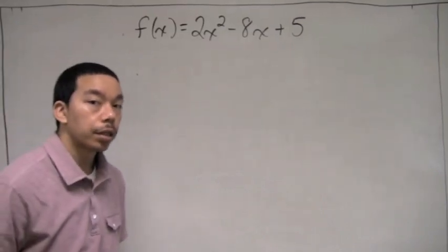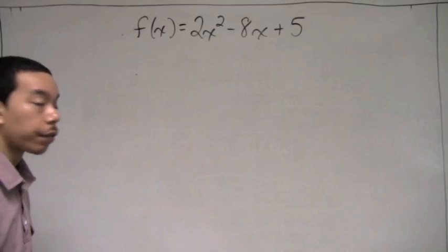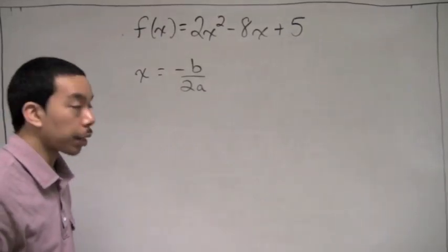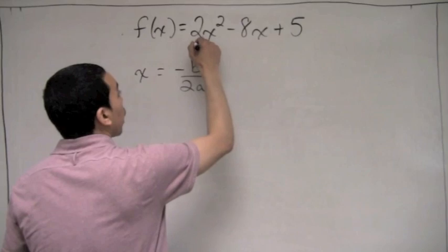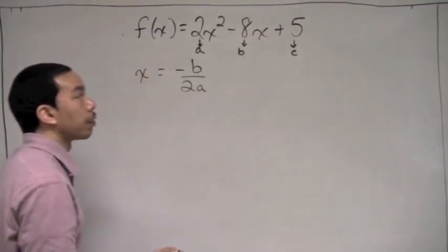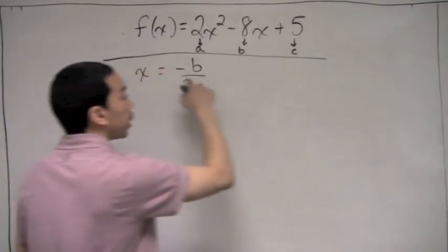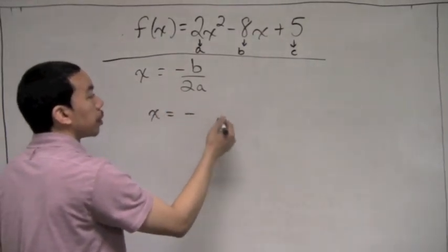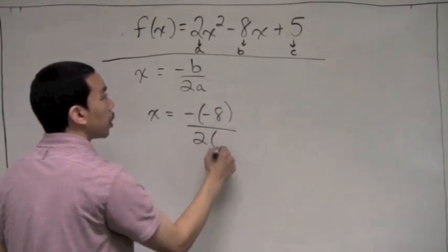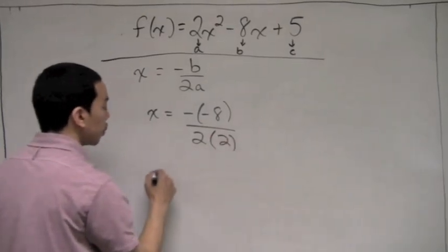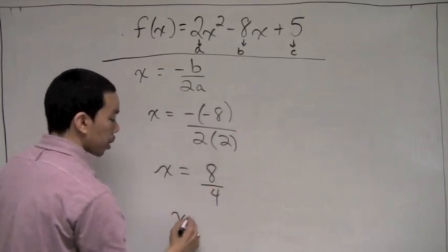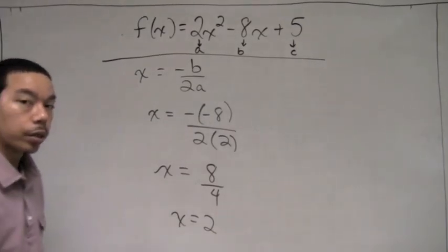So we would like to find the vertex, and we use x equals negative b over 2a. For our function, a is 2, b is negative 8, and c is positive 5. So x equals negative of negative 8 over 2 times 2. A negative of a negative makes positive 8, and 2 times 2 is 4, so x equals 2. That is the x coordinate of the vertex.